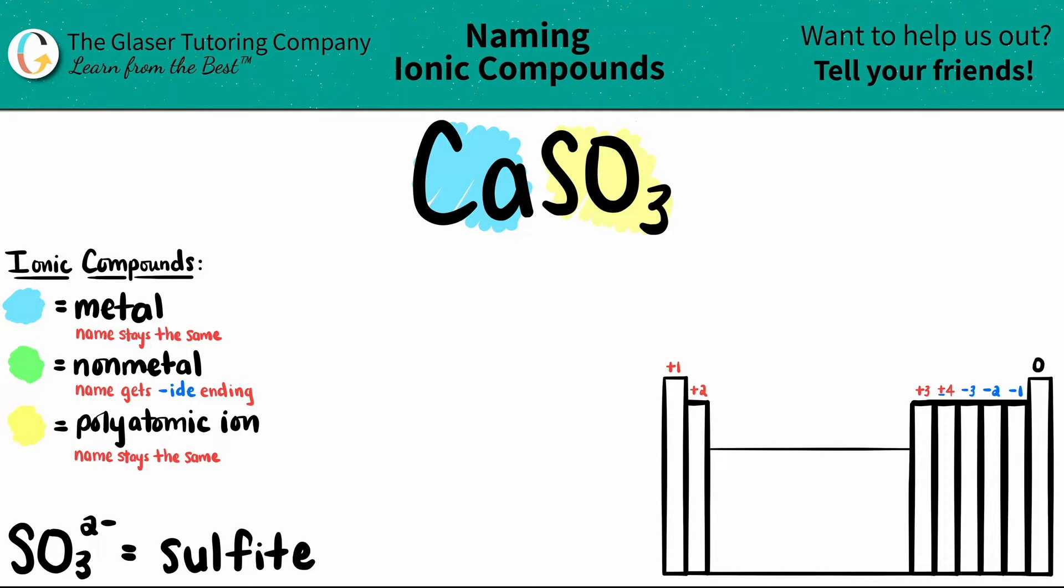Now we're ready to name them. The metal name always comes first, and that name stays exactly the same. So Ca, which is right here on the periodic table, it's somewhere over here, right? This is calcium.